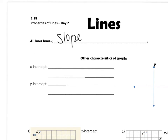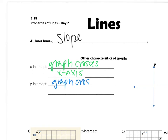They have an x-intercept, which is where the graph crosses the x-axis, and they have a y-intercept, which is where the graph crosses the y-axis. It's also important to know that an x-intercept is also known as a zero of the function. It's just another name for it.